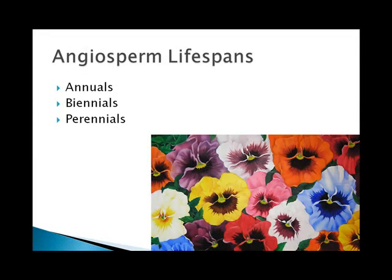Angiosperms have different lifespans, and they're classified by their lifespans in addition to many other things. The annuals have a lifespan of one year or less — they sprout from seed, they reproduce, and they die all in the same season. Most of these are herbaceous and don't bother putting up a bark layer because they're not going to be around for more than a year. Most of our crop plants are annuals: wheat, corn, barley, rye, tomatoes, broccoli, brussels sprouts — all of that.